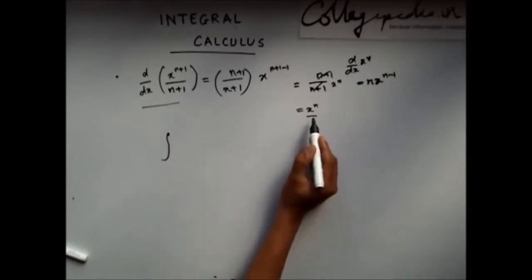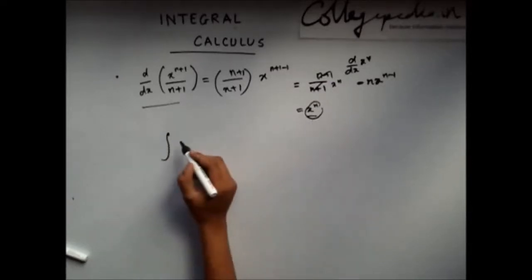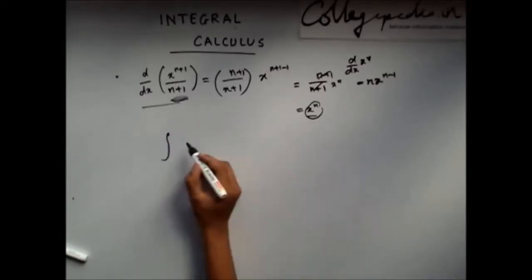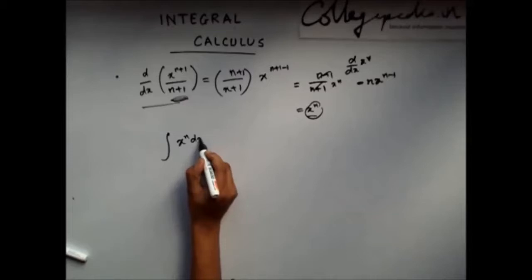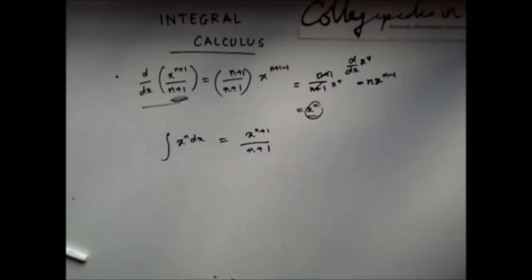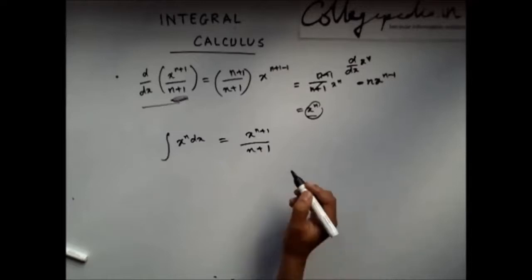So if I know this and I want to get this, what will I do? I will integrate this. So integration of x^n dx is x^(n+1) divided by n+1. Now before we move further,